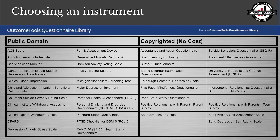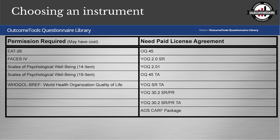We have a list on our website. Some instruments are in the public domain — those are open source tools freely available to anyone. We also have some that are copyrighted but where the copyright holder does not charge for them, so you're able to use those as well. Some require you to request permission — you submit to the copyright holder, they send a letter back, and you send us a copy of that letter, though there may be a cost depending on the tool. Then there are paid license agreement tools — mostly we work with OQ Measures on those, and we also have a CARF package. Our website discusses the pricing for those.